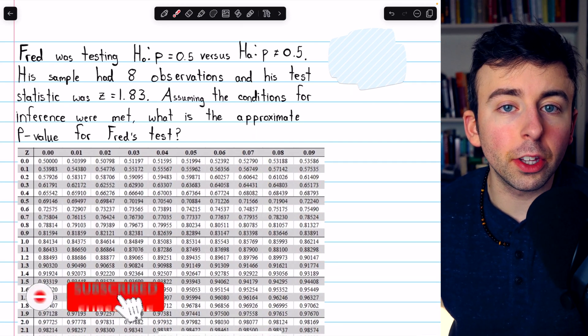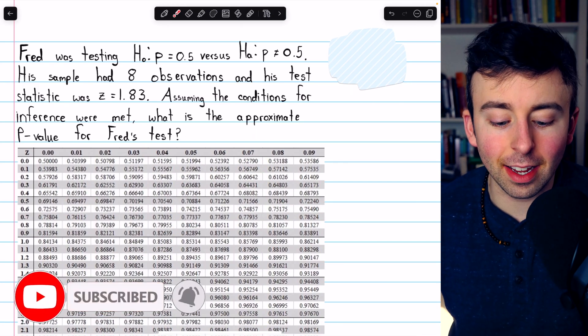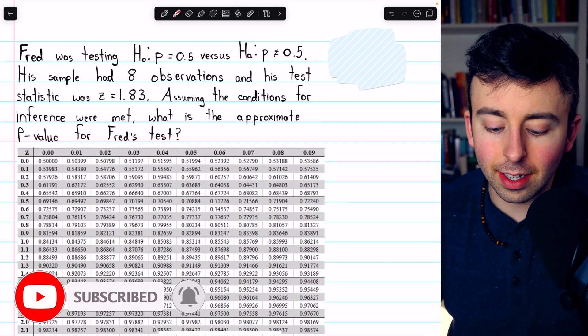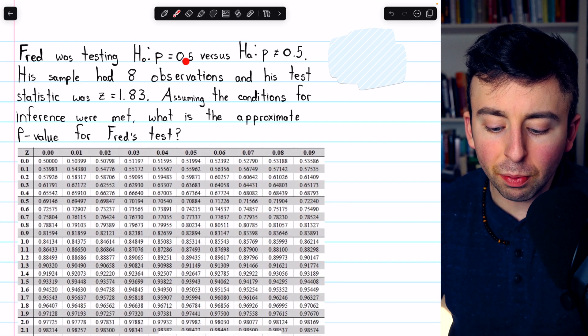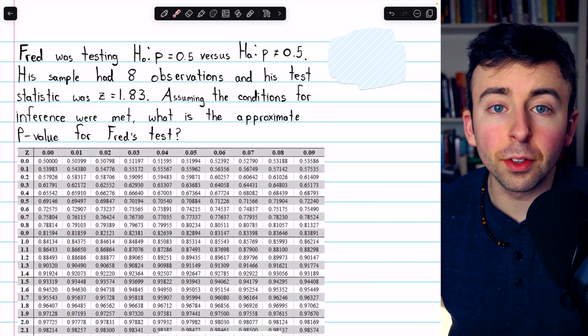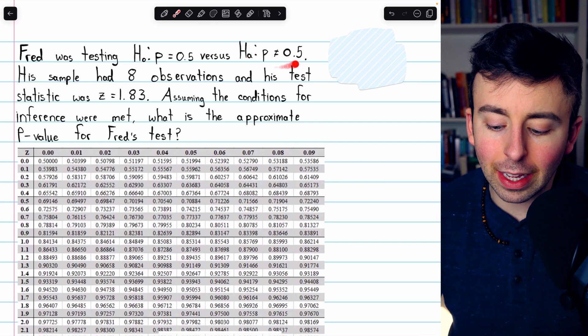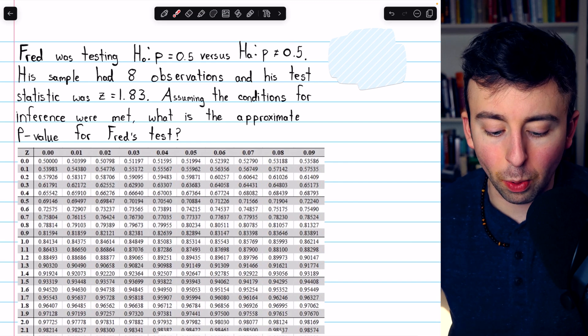Let's go over how to find a p-value from a z-test statistic. Fred was testing the null hypothesis that the population proportion p is 0.5 versus the alternative hypothesis that the population proportion is not equal to 0.5.